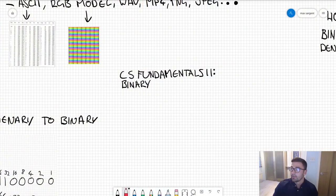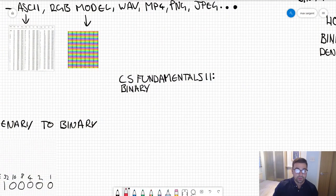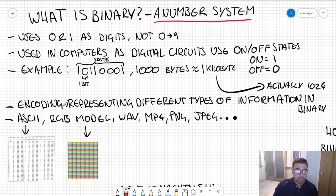Let's just briefly talk about the difference between binary and denary. Binary is just a number system which uses zero and one as the digits. What is denary then? Denary is the number system which uses zero through nine.